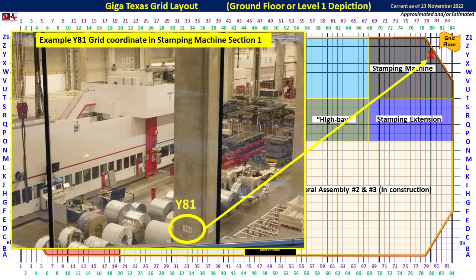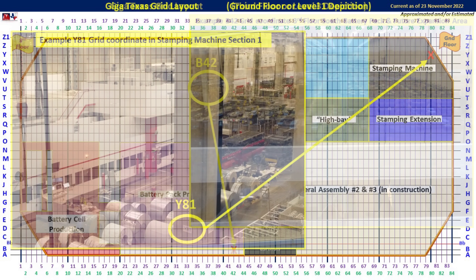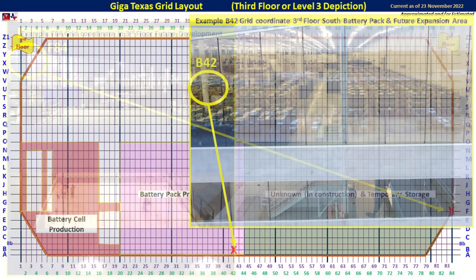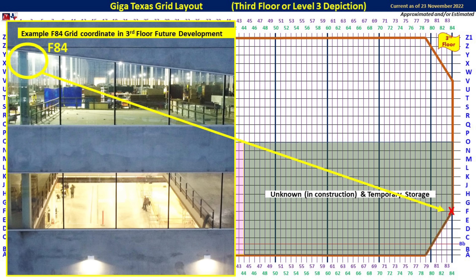Moving over to the west side of the building, we have a view inside the third floor of the general assembly and battery pack location. Here they are currently stockpiling a lot of 4680 structural packs. The location is B-42, and in the grid map you can see exactly where this is located. In this example, we're on the far southwest of the factory, looking inside both the third and the second floor with views down even to the ground floor. This is at F-84, and on the grid map you can see exactly where this is located — a rare image showing three of the floors in one picture.